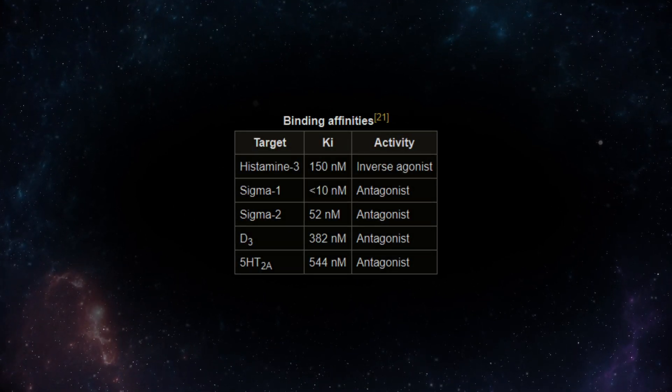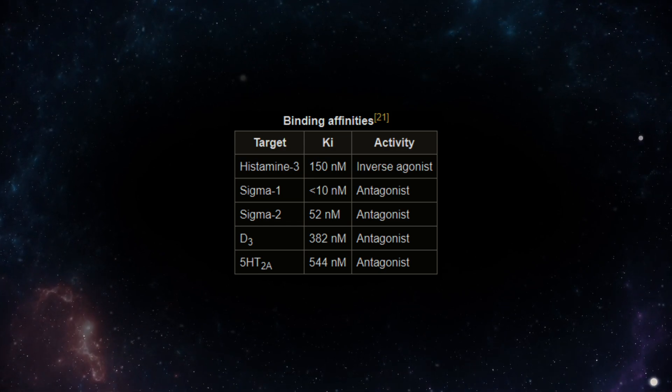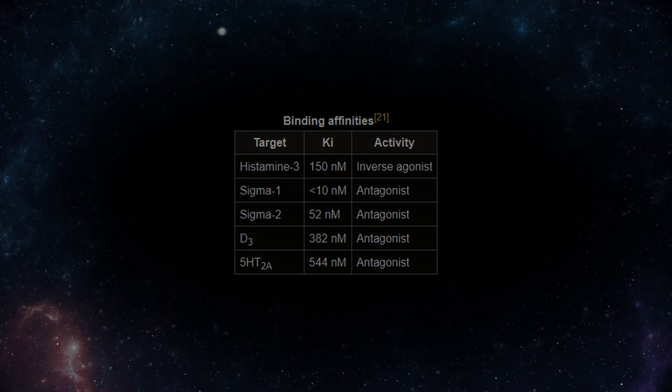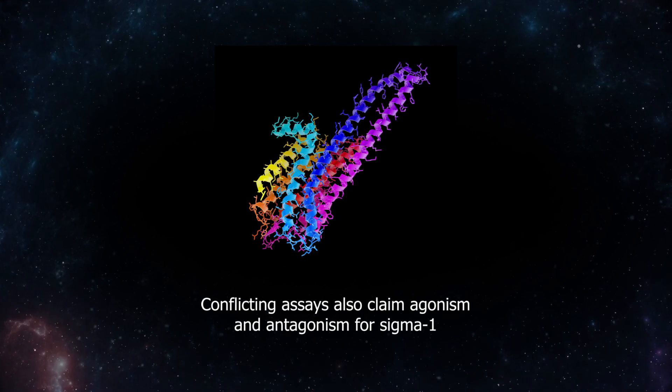Interestingly, it's also been shown that pitolisant has a high binding affinity for sigma-1 and sigma-2 receptors, as well as moderate binding to 5-HT2A and dopamine-3. However, there are conflicting in vitro results for its activity at 5-HT2A.